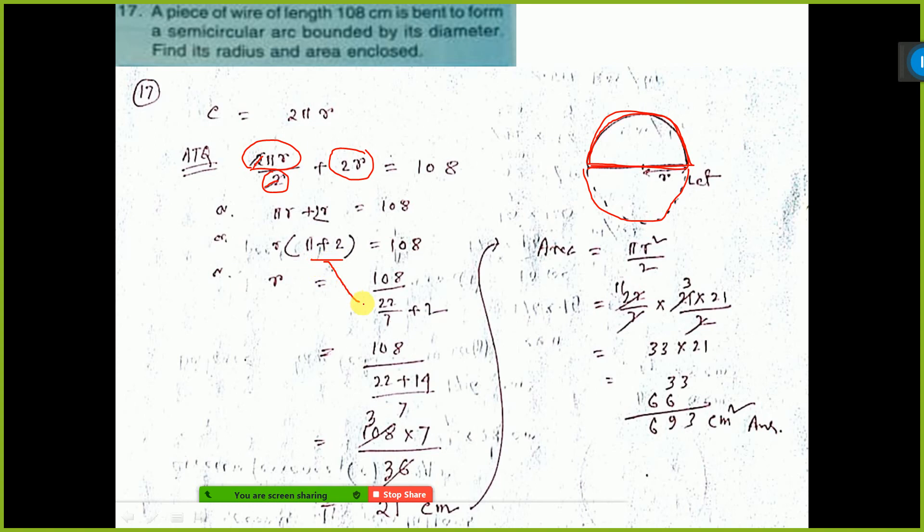π plus 2 will go down, put the value of π. Here do LCM, it will come, 7 is the LCM. So 22 plus 14, 7 will go down. Do the calculation, you are getting the value of r, 21 cm.